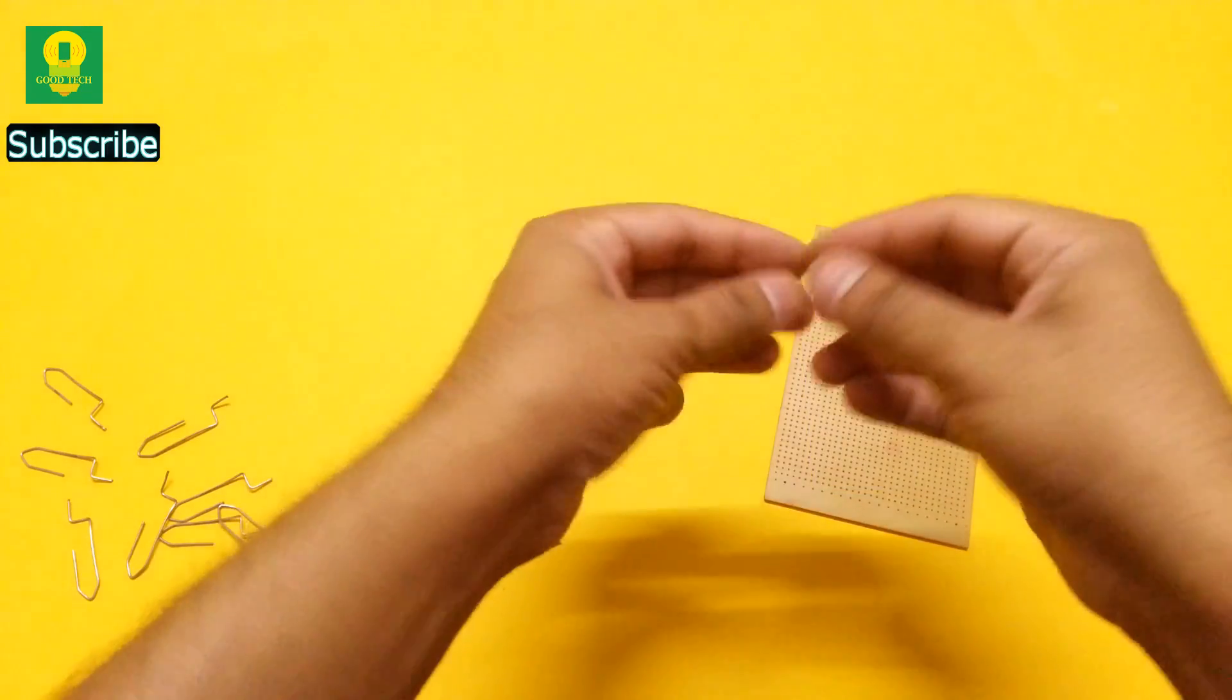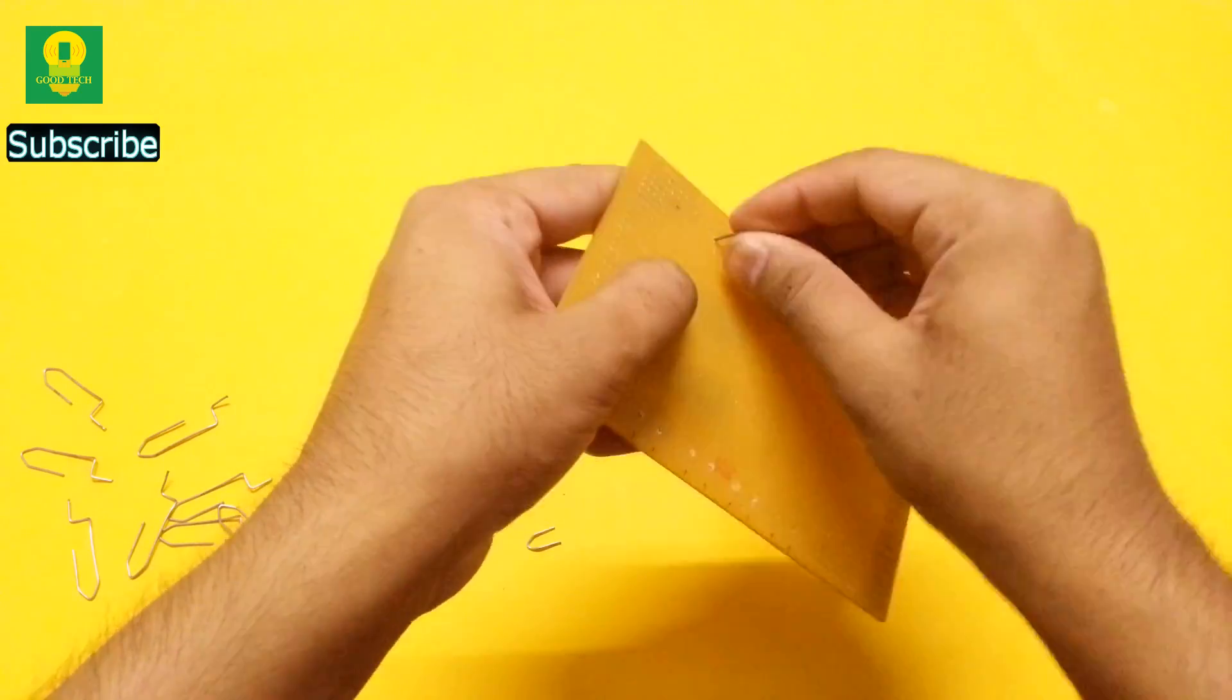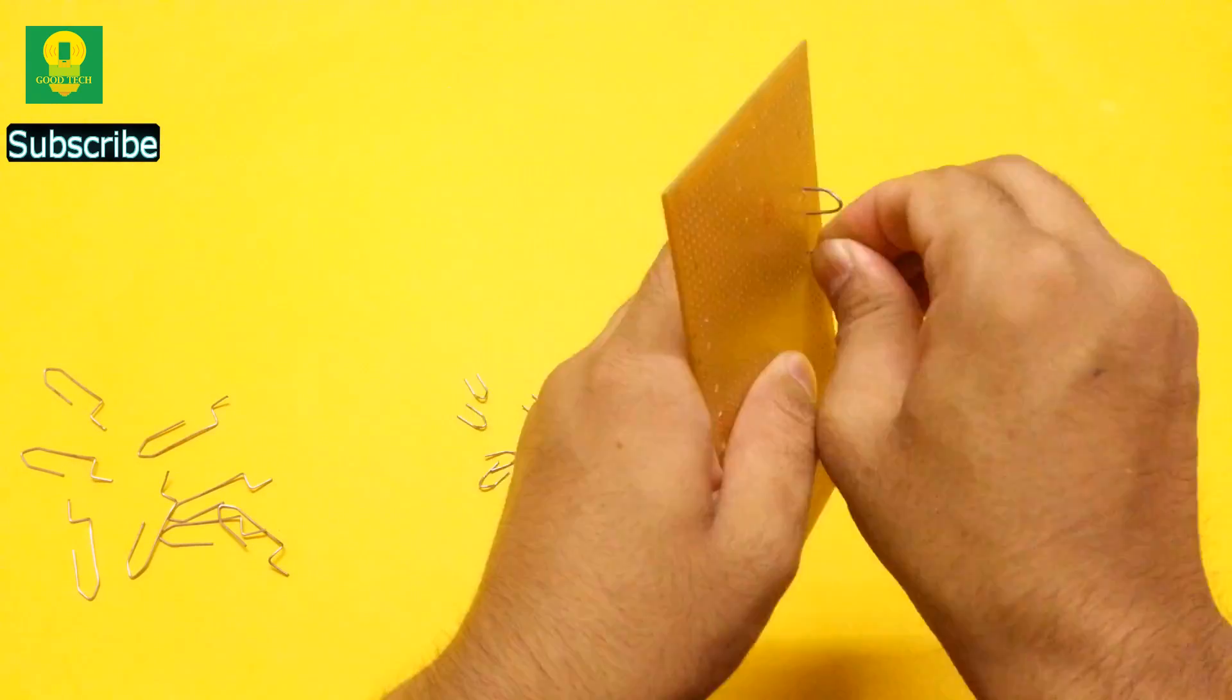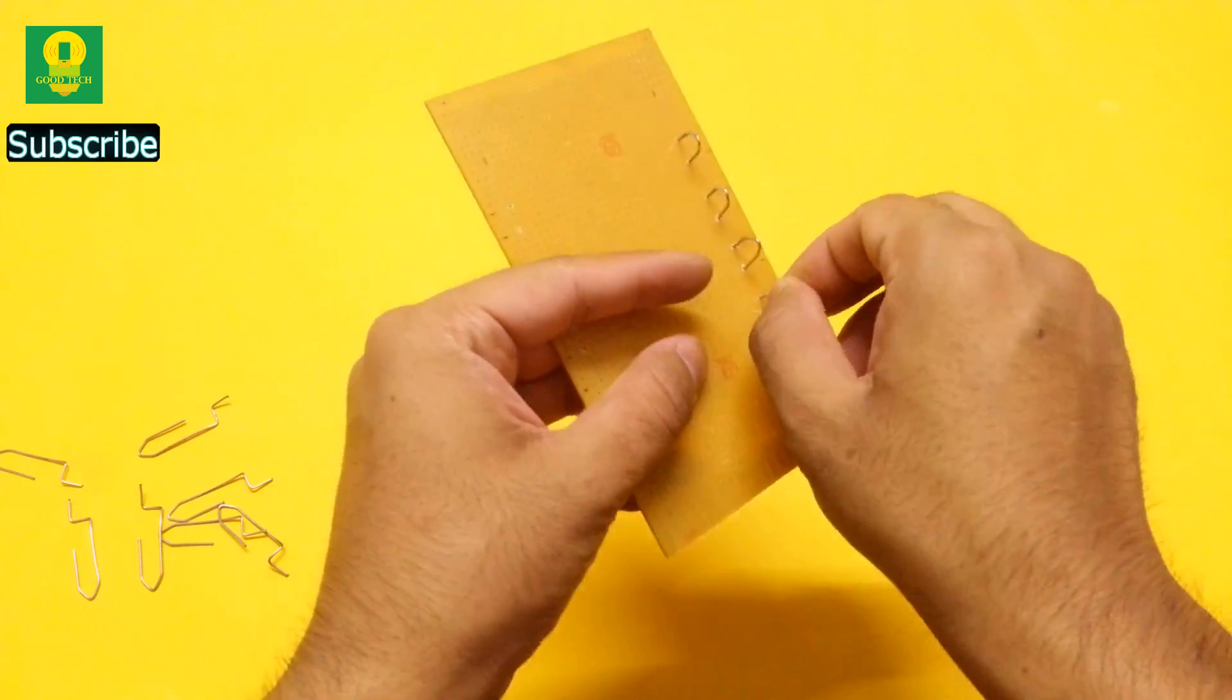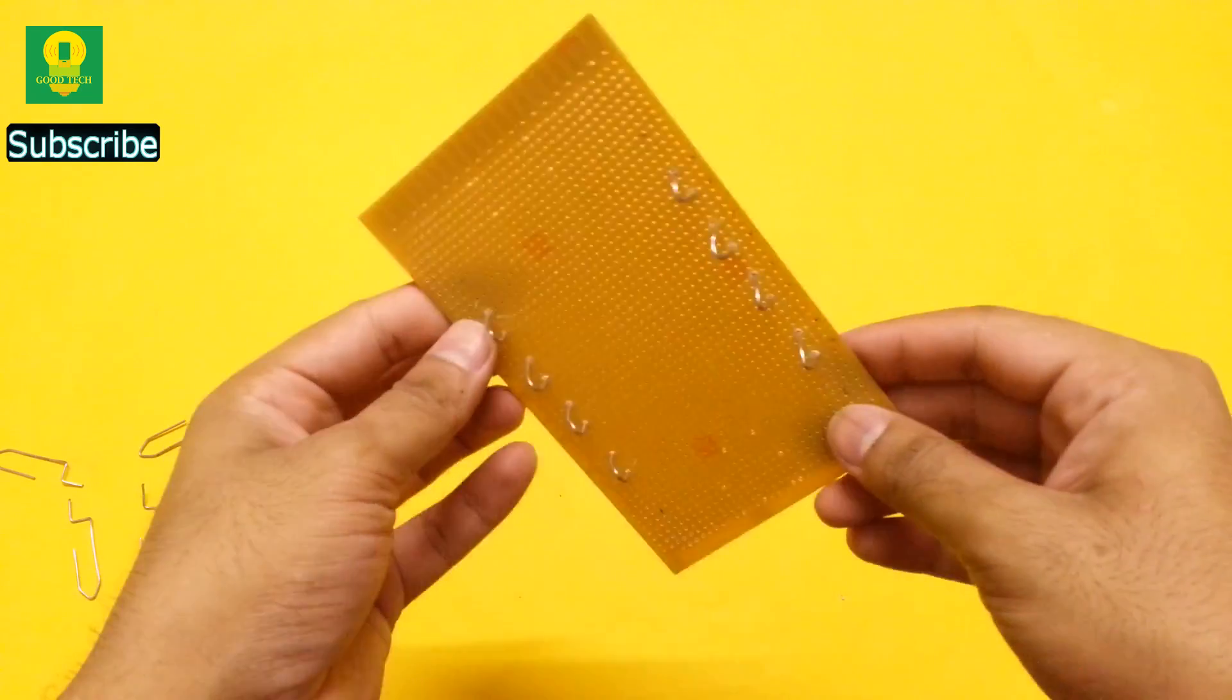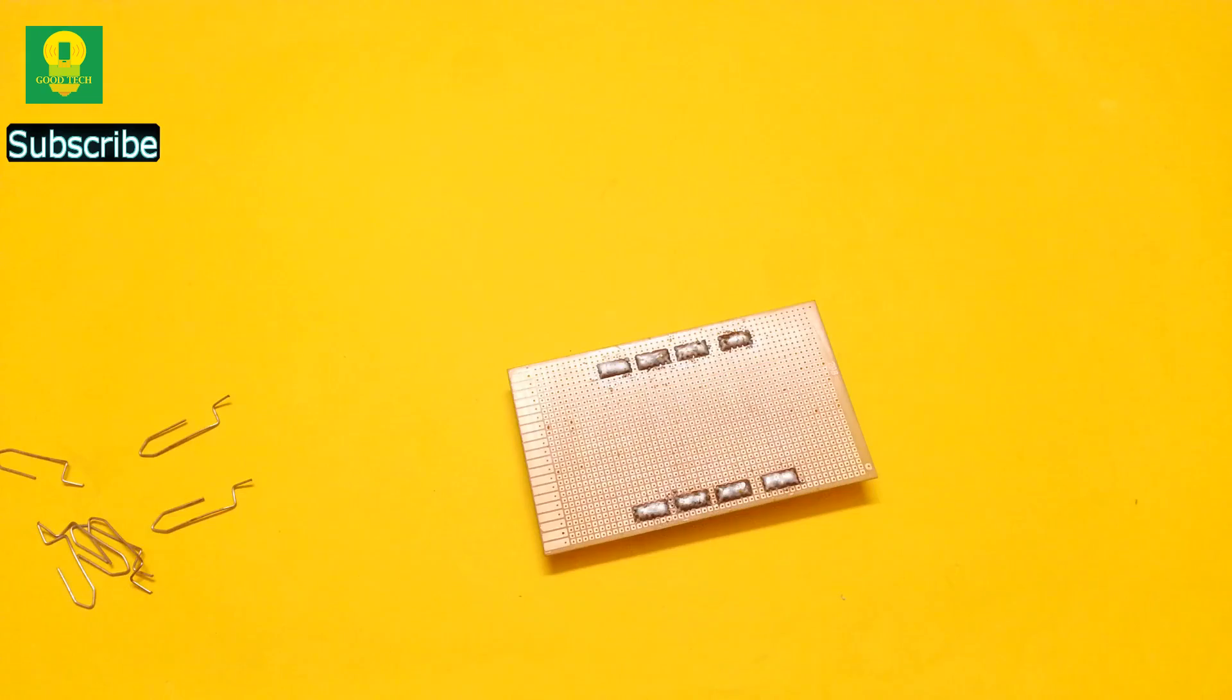Now insert the clips in the PCB board. Solder them really well, so that the copper does not wear off.